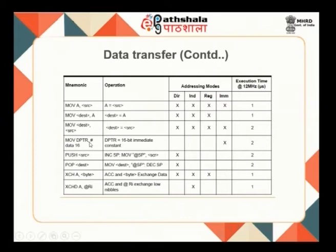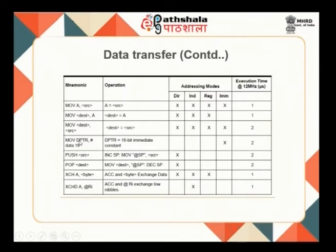MOV DPTR, #data16 is used to load a 16-bit immediate value into the data pointer register DPTR, which combines DPL and DPH to form a 16-bit register. This instruction only supports immediate addressing, indicated by the hash (#) symbol.